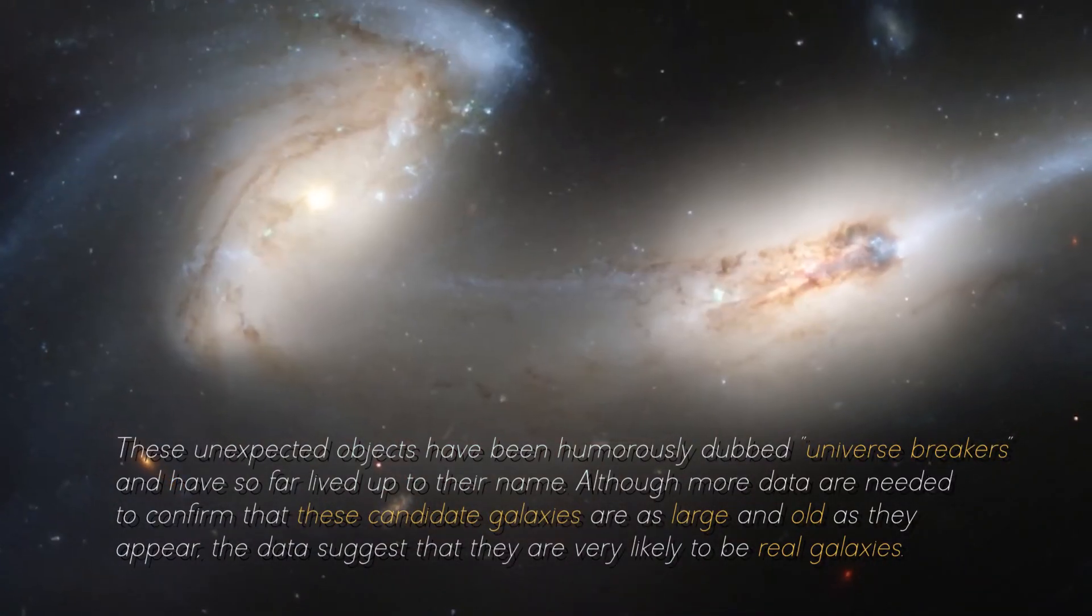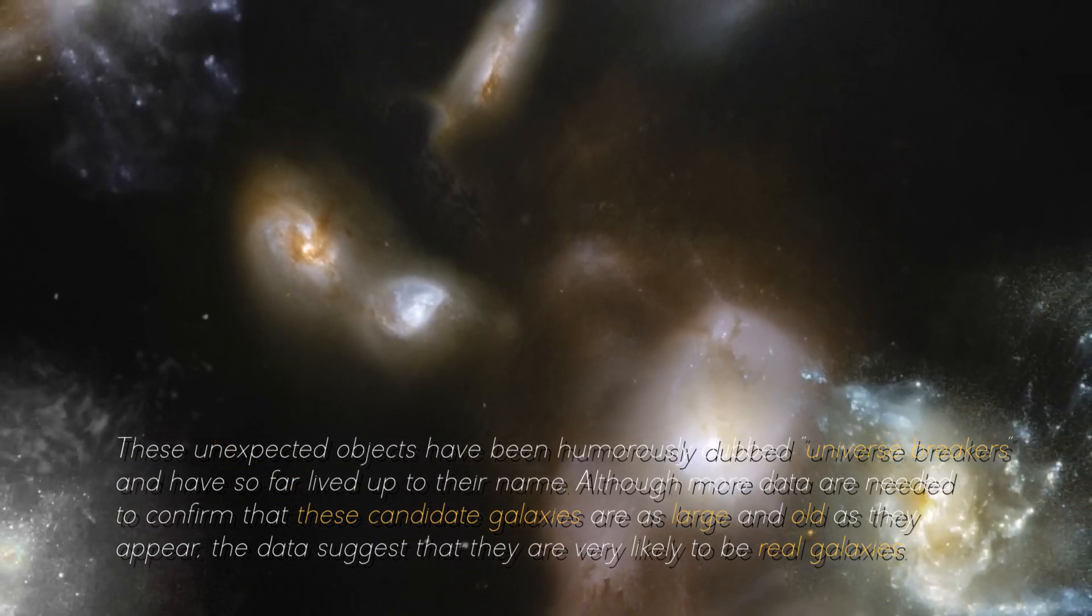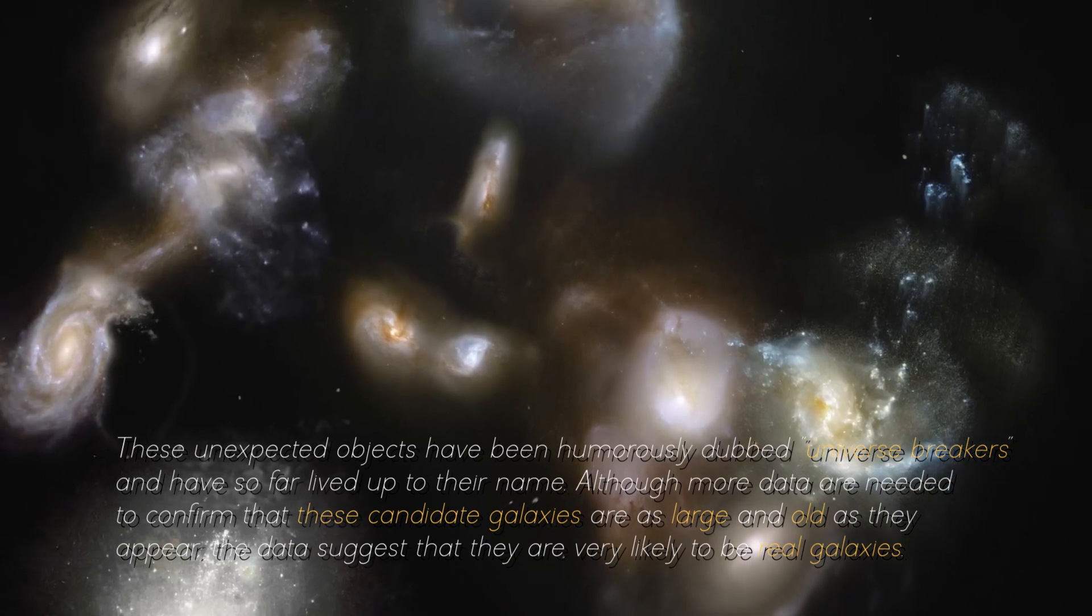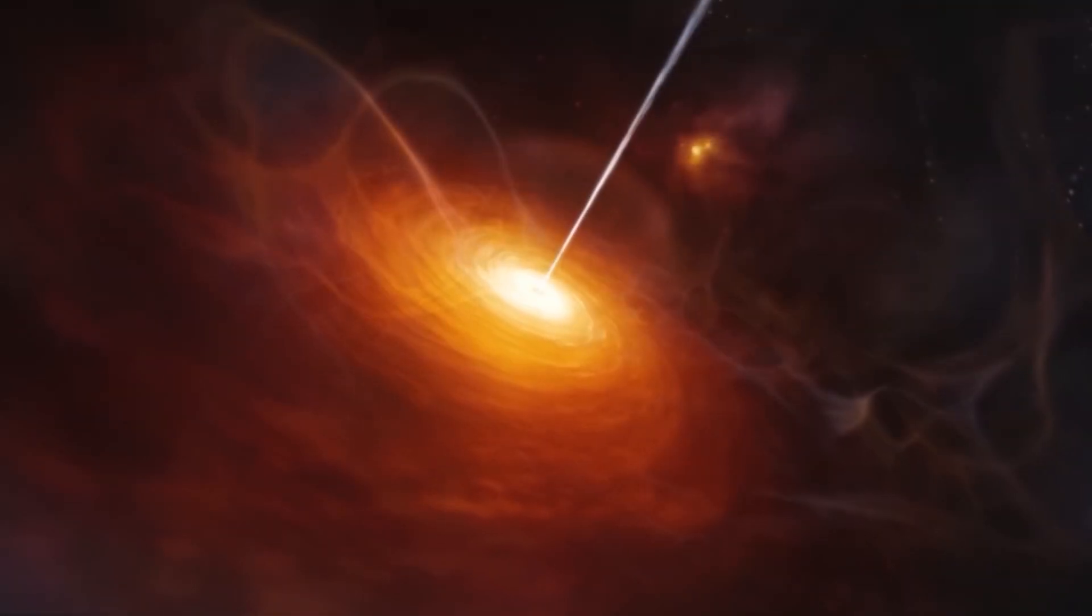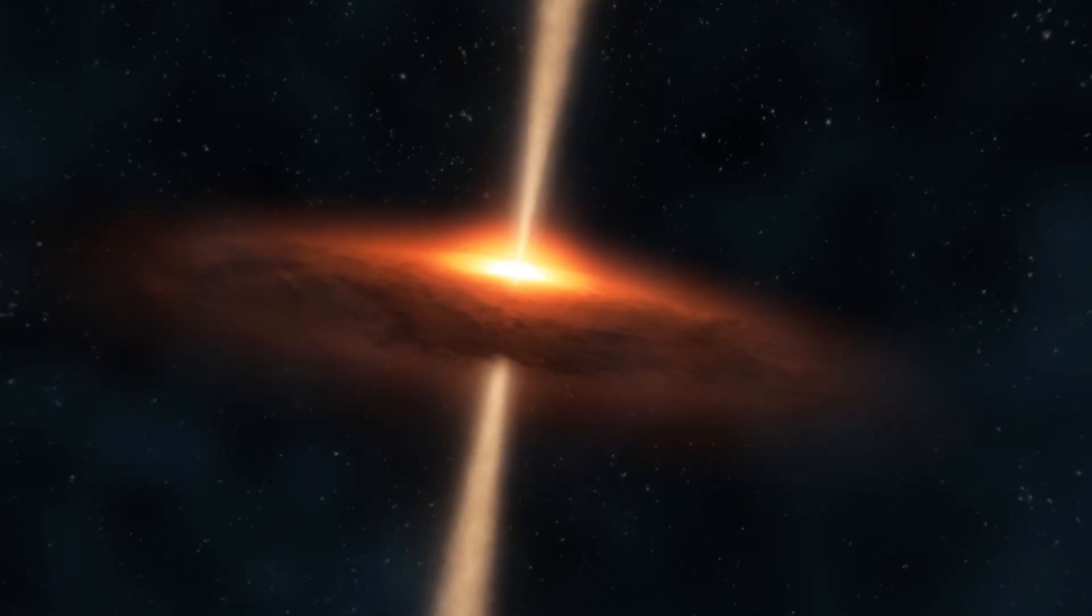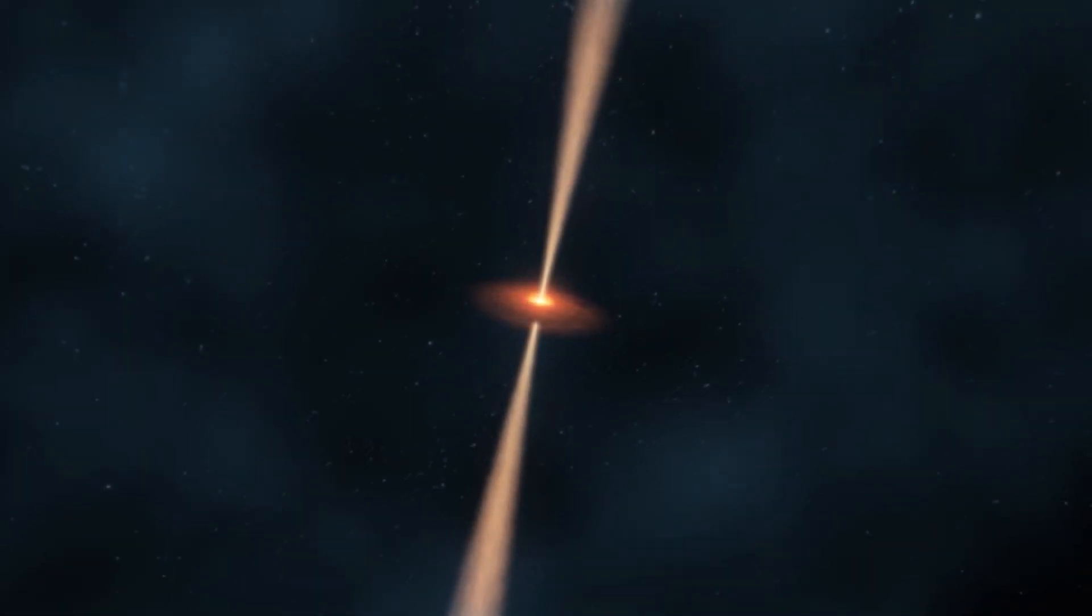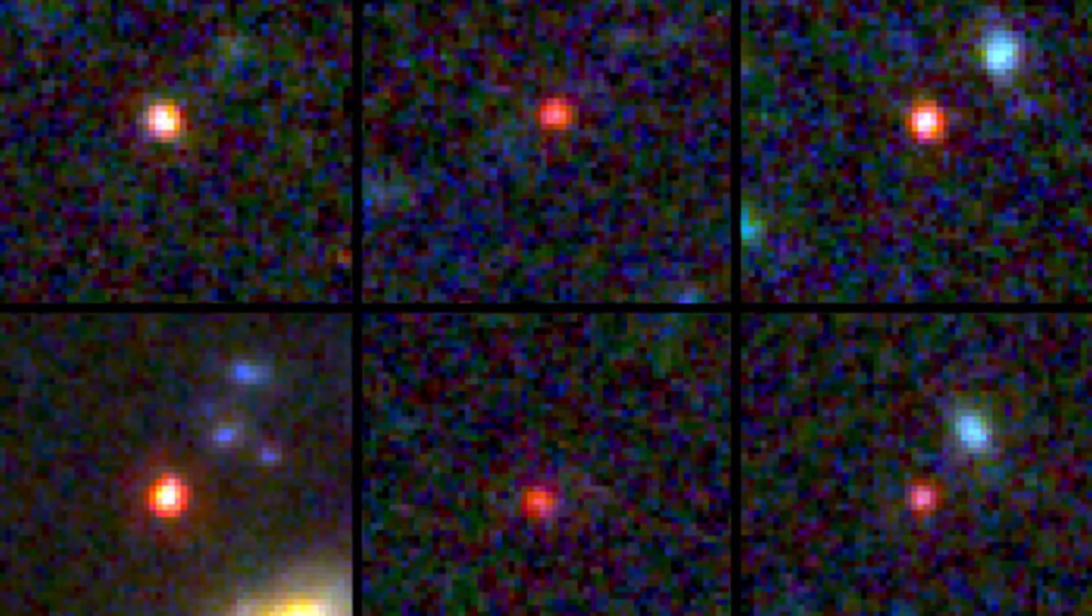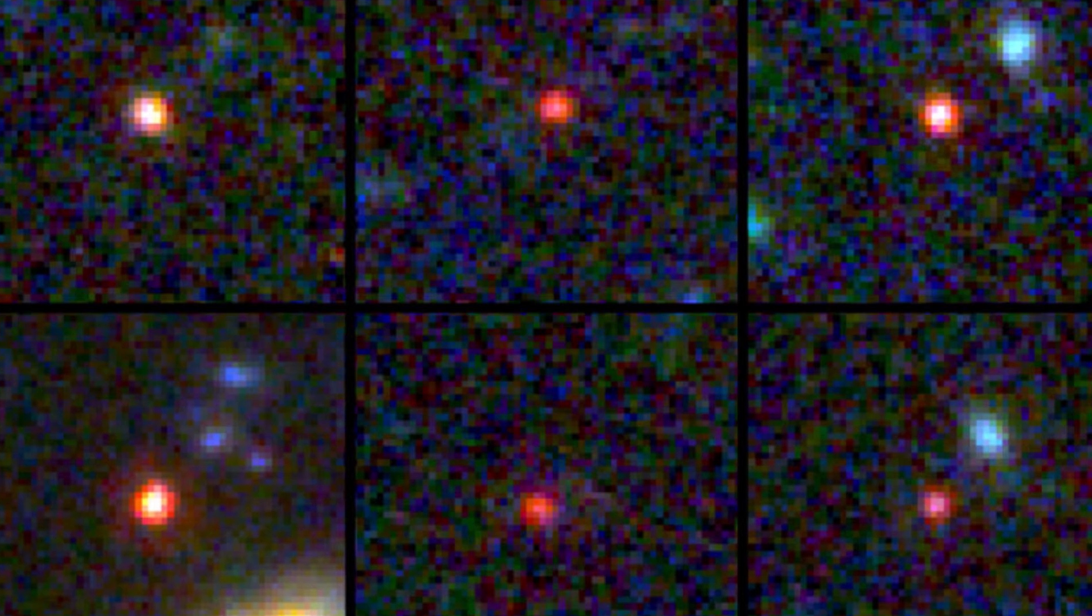These unexpected objects have been humorously dubbed universe breakers and have so far lived up to their name, although more data are needed to confirm that these candidate galaxies are as large and old as they appear. The data suggests that they are very likely to be real galaxies. There is the possibility that some of these objects are obscured supermassive black holes, which is another interesting aspect to consider. However, the amount of mass discovered implies that the known mass of stars at this stage of the universe is up to 100 times larger than previously thought. Although the sample is small, it is still a remarkable difference. It is possible that these objects are not galaxies at all.